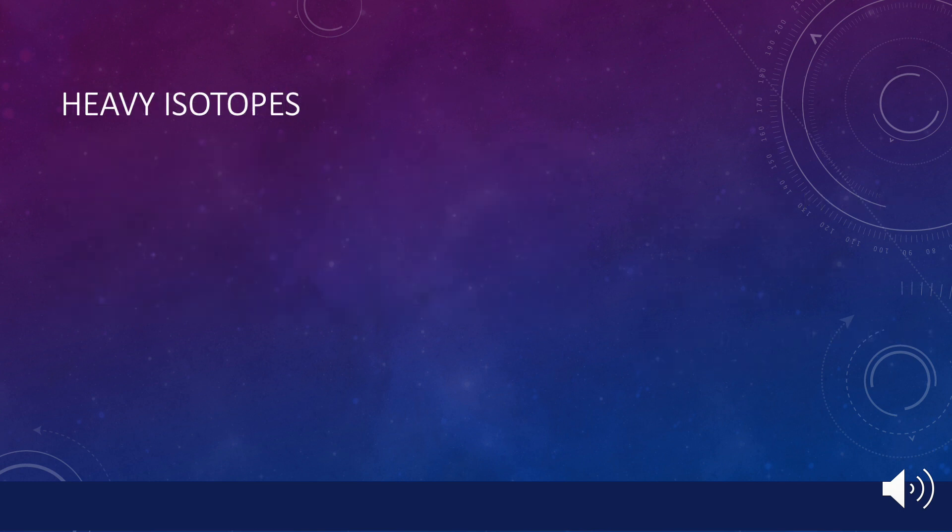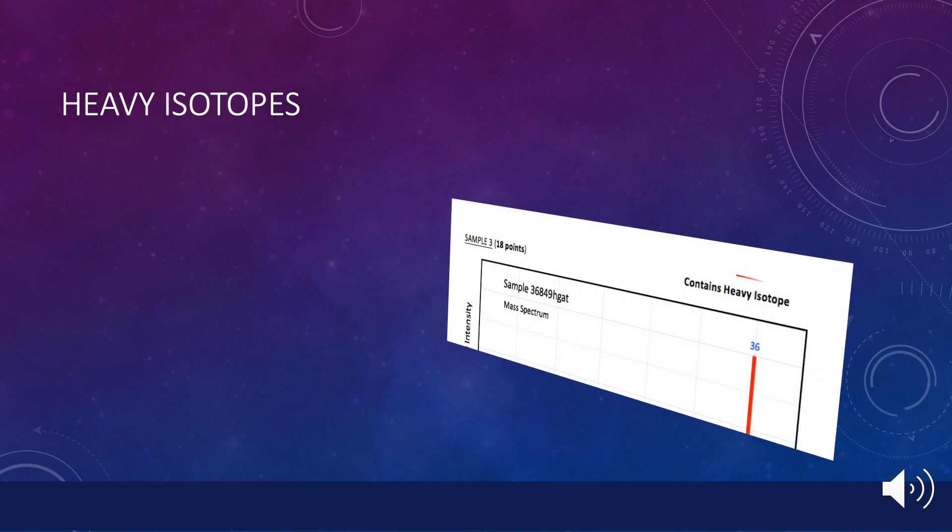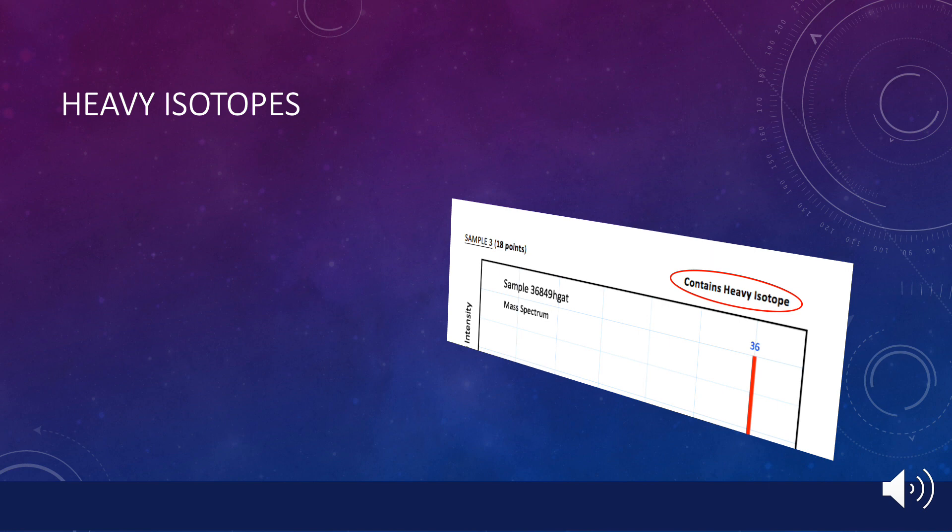Some of the samples you will analyze contain heavier isotopes of their atoms. These will be labeled as such on your lab report worksheet. For those compounds, only one of the elements will be present as a heavy isotope, with the other elements having their most common mass values. A list of the possible isotopes you may encounter is given in the background information, and is also shown here.